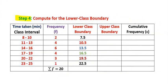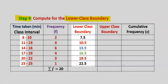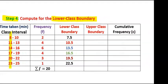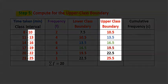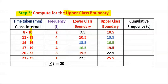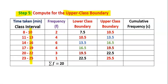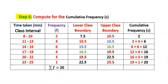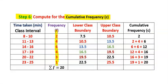Step four: compute the lower class boundary, which is 0.5 less than the lower class. Step five: compute the upper class boundary, which is 0.5 greater than the upper class. Step six: compute the cumulative frequency. Starting from the frequency column: 2, then 2 plus 4 is 6, 6 plus 6 is 12, 12 plus 4 is 16, 16 plus 3 is 19, and 19 plus 1 is 20.